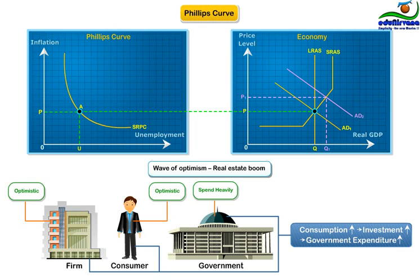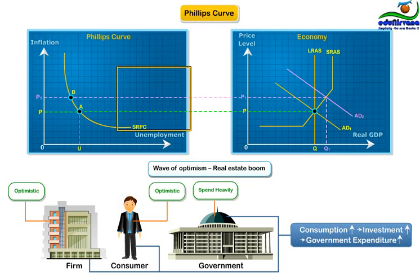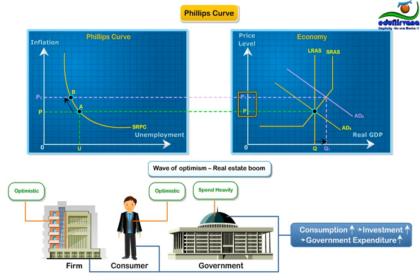Now, the equilibrium price and GDP are at P1 and Q1. This situation is represented as point B on the left-side graph. So in summary, with the increase in AD from AD1 to AD2, the equilibrium has shifted to point B from point A. The overall GDP increases from Q to Q1, owing to better capacity utilization of the firms matching higher demand from consumers. Also, the prices have shifted from P to P1, which means there is a higher rate of inflation.